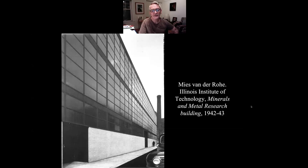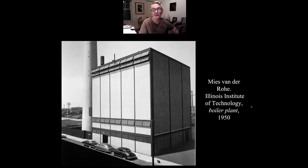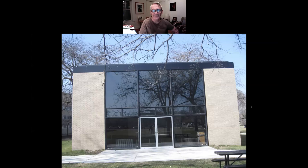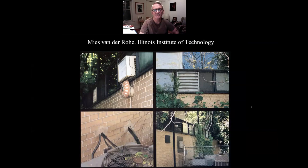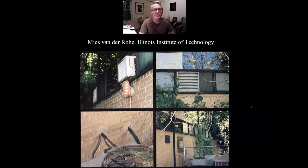Here are some other IIT buildings — there's simple brick cladding on some of them. The Minerals and Metal Research Building, the Boiler Plant — I love the Boiler Plant building. Chapel. They just let Mies take over and do it all. After Mies died in the late 1960s, if you don't maintain these buildings or upgrade technology like air conditioning in a way that's respectful of the building, you get unfortunate results. If Mies isn't around, things drift.